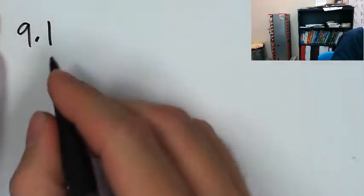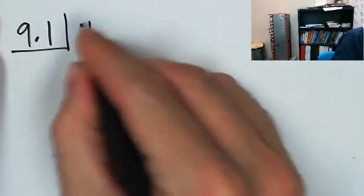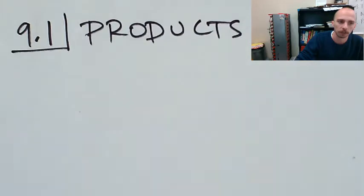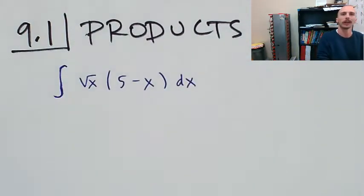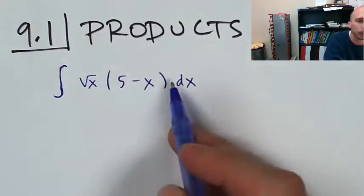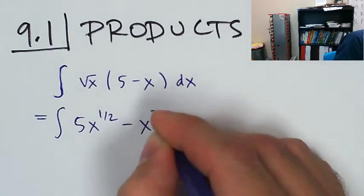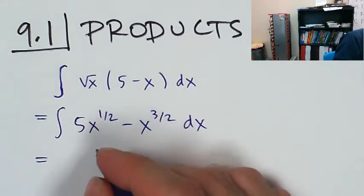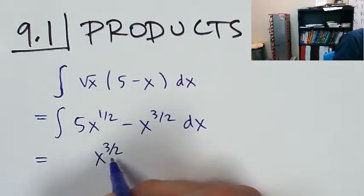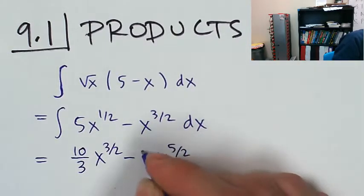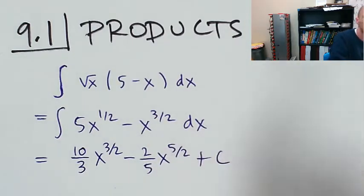Back to 9.1, integral of a product. We need to be able to do the algebraic simplification, like this one. I'm not going to use UDU or UDV on this because both pieces are algebraic. I can think of this as x to the 1 half, use the distributive property. This equals 5x to the 1 half minus x to the 3 halves before anti-differentiating. Then divide by 3 halves is multiplying by 2 thirds, add 1 to the power, divide by the new power, and add plus C.